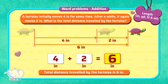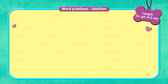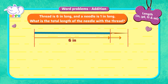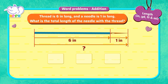How nice! A thread is 6 inches long, and a needle is 1 inch long. What is the total length of the needle with the thread? To find the total length of the needle with the thread, we add each of the lengths. 6 inches plus 1 inch is equal to…